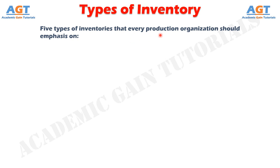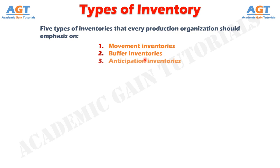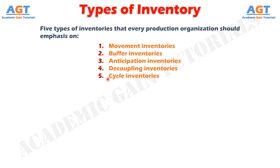Number 1: Movement Inventories. Number 2: Buffer Inventories. Number 3: Anticipation Inventories. Number 4: Decoupling Inventories. And Number 5: Cycle Inventories.